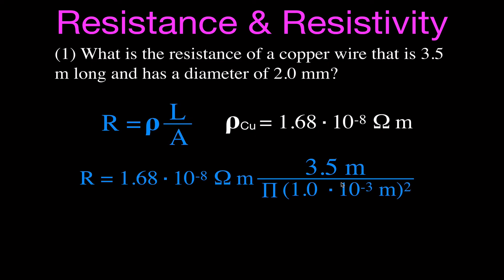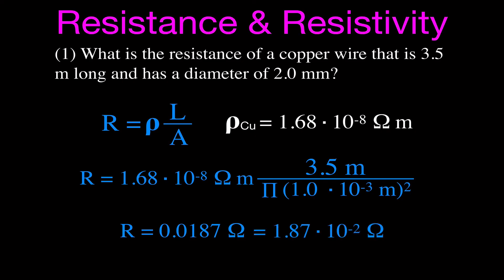Pi is 3.14159. The diameter is 2 millimeters, so the radius is 1 millimeter. A millimeter is a thousandth of a meter, so the radius is 1 × 10⁻³ meters, which we then square to get the area. Plugging those values into our equation — 1.68 × 10⁻⁸ ohm·meters times 3.5 meters, divided by π times (1 × 10⁻³)² — we get a resistance of 0.0187 ohms, or equivalently 1.8 × 10⁻² ohms.